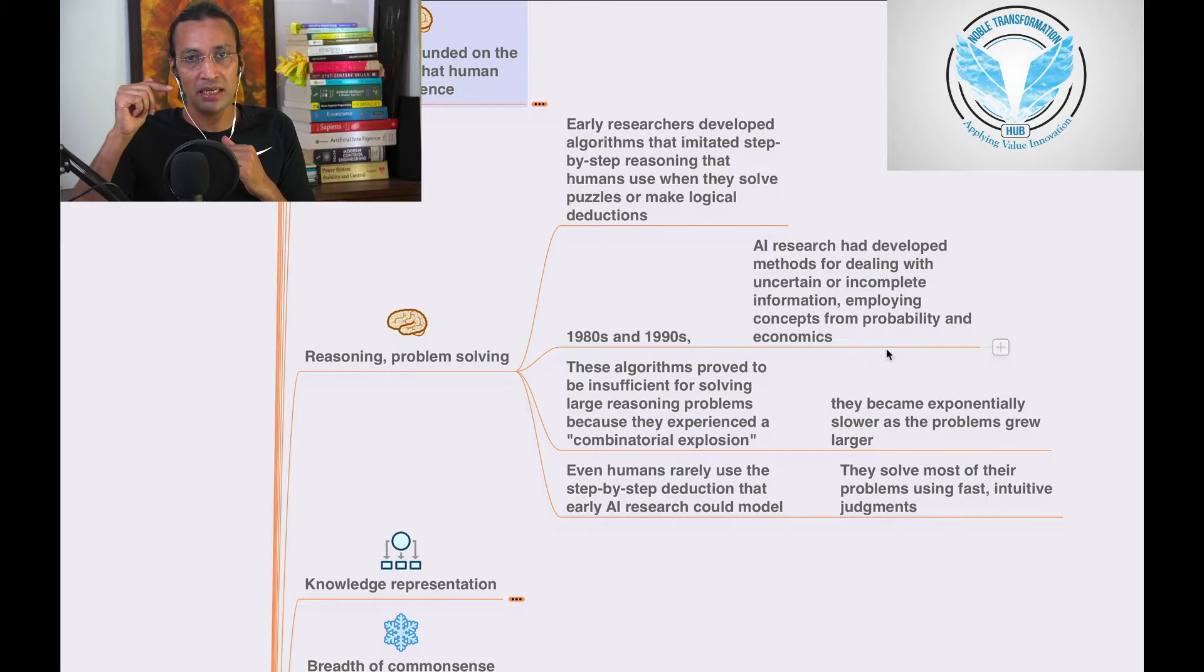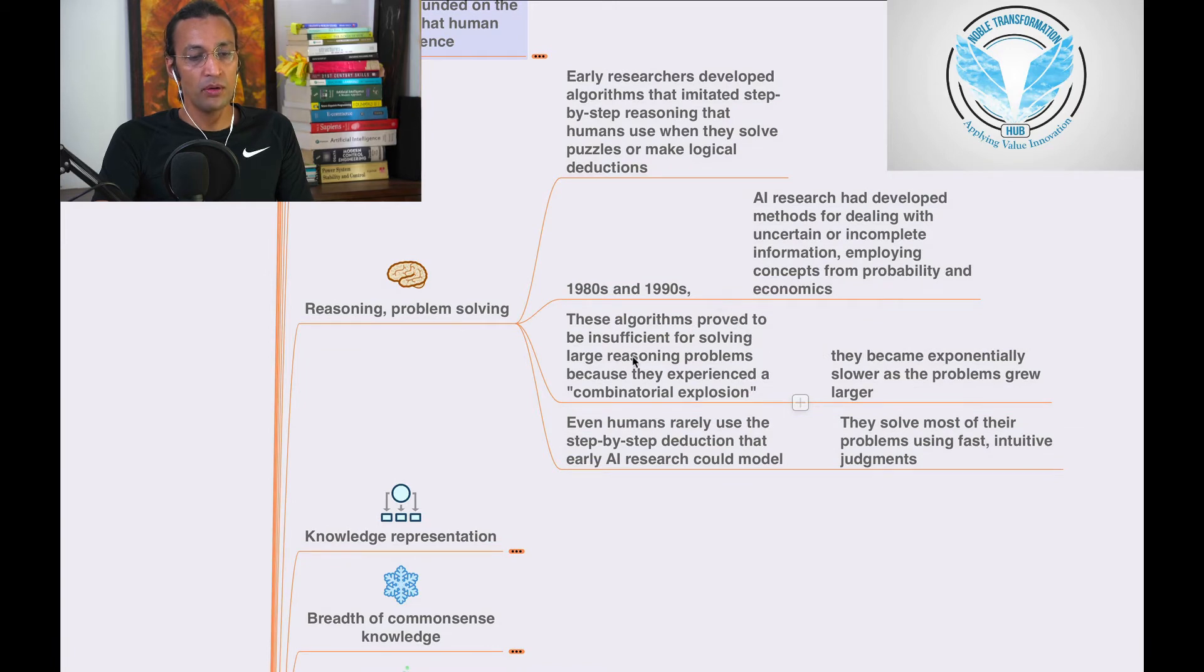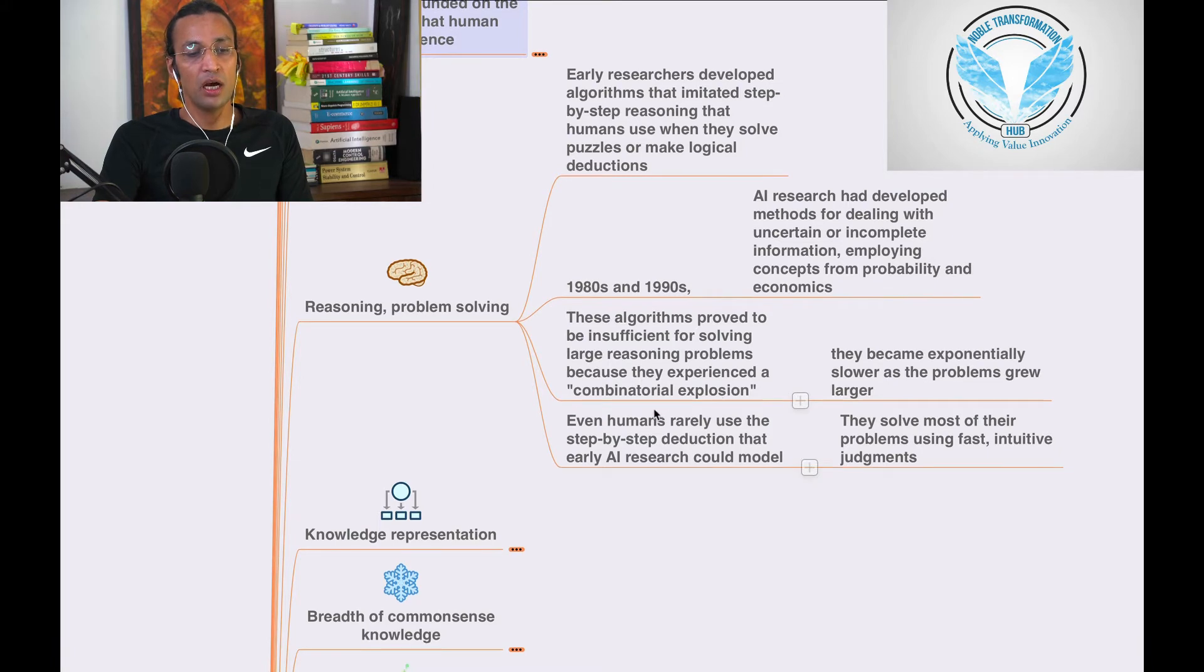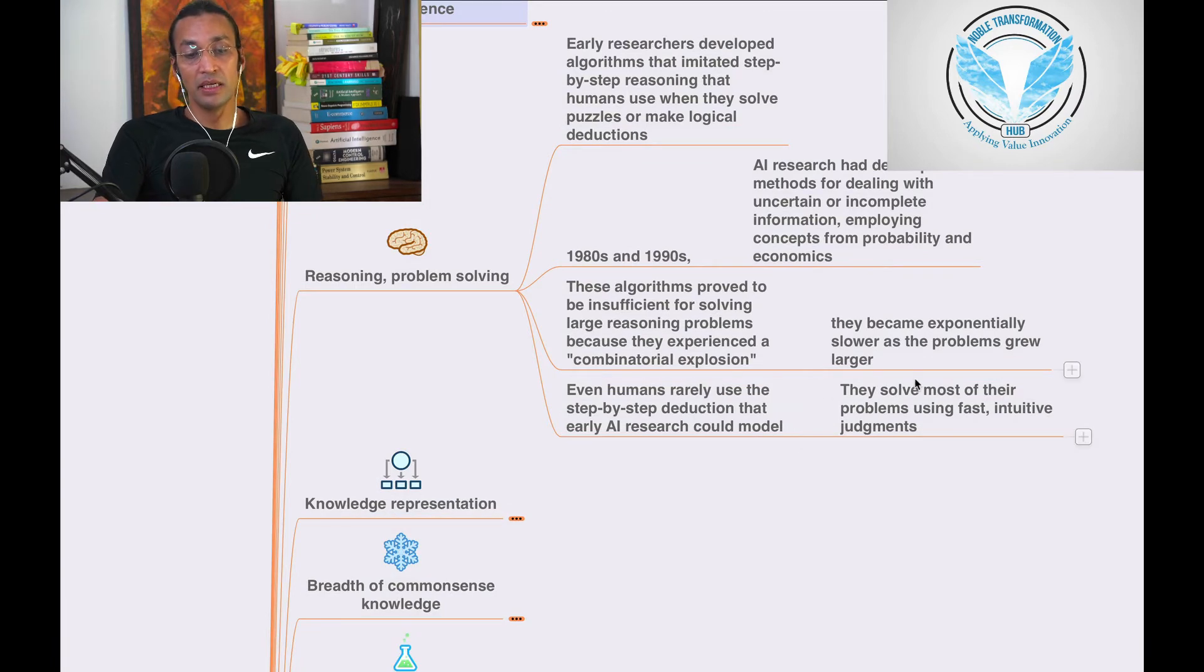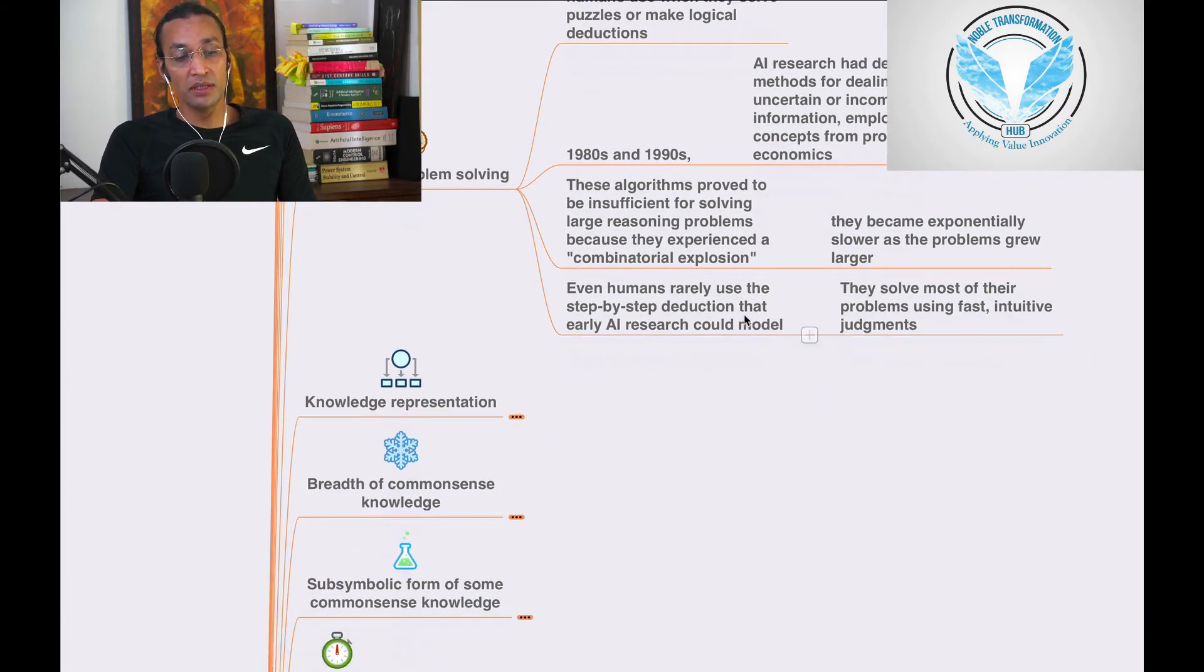At that point in time, 1980s and 1990s, they realized we need data for AI to become more dominant and solve more problems. These algorithms proved to be insufficient for solving large reasoning problems because they experienced a combinatorial explosion. They became exponentially slower as the problem grew larger.